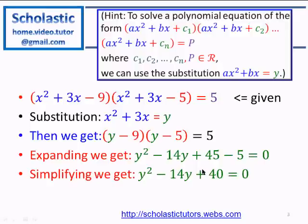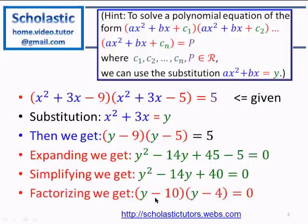Now we need to factor y² - 14y + 40 = 0. Since 40 = 10 × 4 and 10 + 4 = 14, we can use those factors. The factored form is (y - 10)(y - 4) = 0, giving us the middle term -14y correctly.